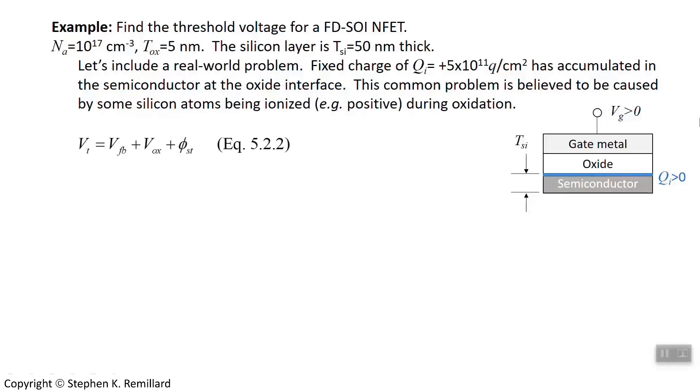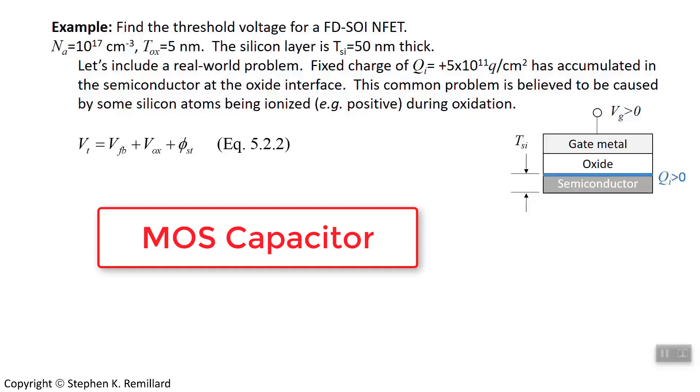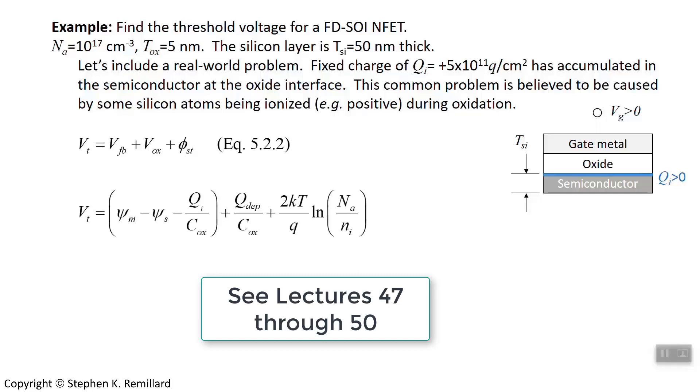So we'll start off with equation 5.2.2. We want to find the threshold voltage. Look at this as a MOS capacitor. You have a flat band condition, you have an oxide voltage, you have a surface potential at threshold. And they add up to give you the threshold voltage. We can find description throughout Chapter 5 of the flat band potential, oxide potential, and the surface potential. And remember the flat band potential is the difference in the work functions between the gate metal and the semiconductor.